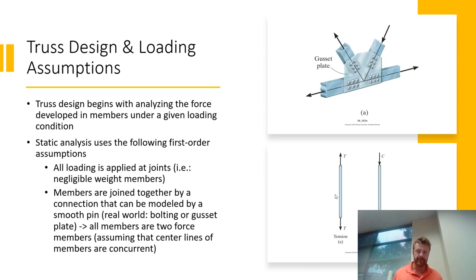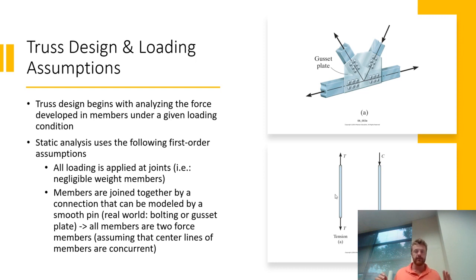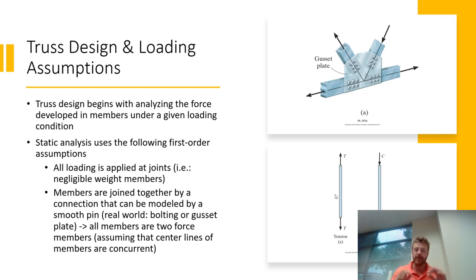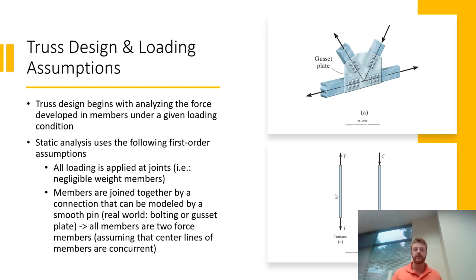When we actually analyze trusses in this class, even though this is a very real practical thing, it's going to feel very simple. The underlying mathematics is very simple, and that comes from the simplifying assumptions that we will use in our analysis. In a truss, we assume that all of the forces are applied at a joint, which means we're going to ignore the weight. If these were uniform cross-section members, they would have a weight that could be modeled as a single weight vector applied at the centroid, but that wouldn't be at the joint. So we're just going to say that all of the loading in a truss, including the weight of the individual members, is applied at the joints.